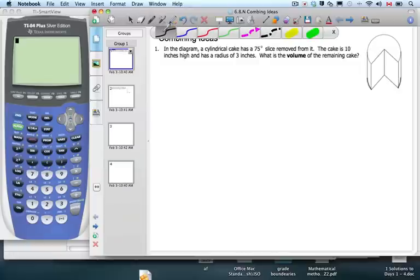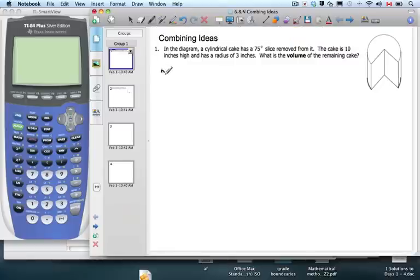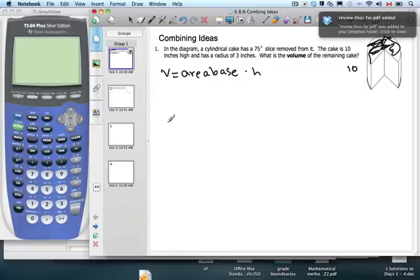So we have to consider how to find the volume of it. Volume, we know, and we've been saying this over and over again, is area of the base times the height. Now the height is easy, that's 10, we're told that. The tricky part is the area of the base this time. We just need to find the part right here, the Pac-Man piece.